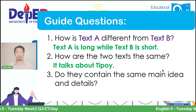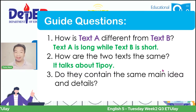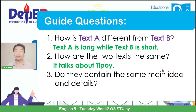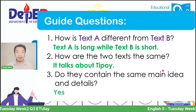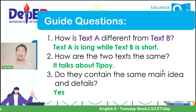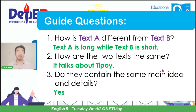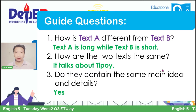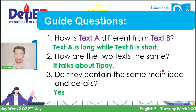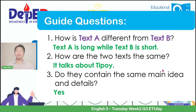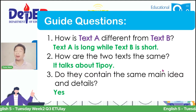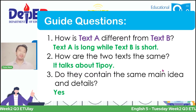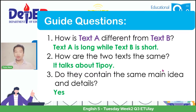We move on to the third guide question: do they contain the same main idea and details? Is the essence or meaning the same? If your answer is yes, then you are correct. That is how we need to work on these different text types—read well, understand them for us to comprehend and have retention. When we have retention, we can tell and give the whole idea more clearly.